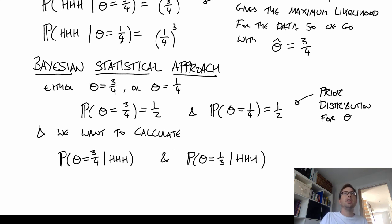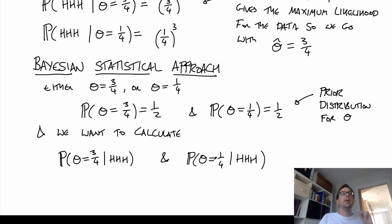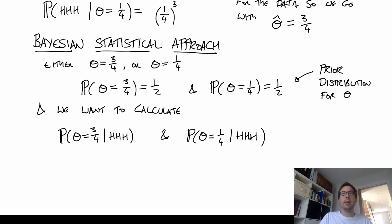It's a very different approach: in classical statistics we give one answer — the maximum likelihood estimator. In Bayesian statistics we don't give one answer; instead we give a distribution — the probability that this is the correct answer — and discuss our confidence through these probabilities. To do this calculation, we use Bayes' formula.